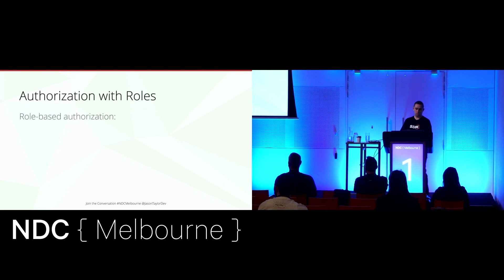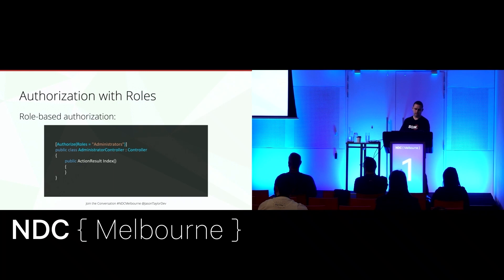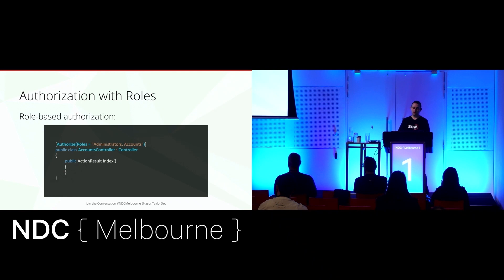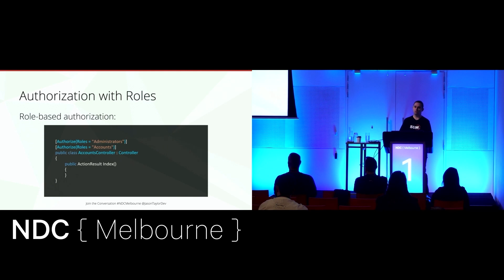Now let's look at authorization with roles. Using the authorize attribute, we can specify roles for a particular action. In this case, we've applied the authorize attribute to the administrator controller and specified the administrators role, meaning it requires an authenticated user who is a member of that role. We can also specify two roles — meaning the user must be a member of either the administrators or accounts role. With two separate authorize attributes each specifying individual roles, the user must be a member of both. The authorize attribute is quite flexible for defining access policy.